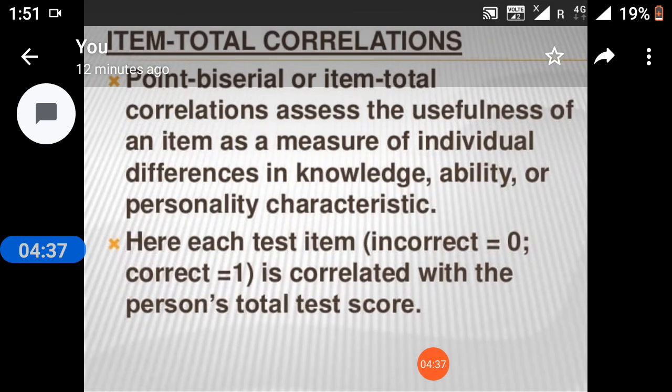Point biserial or item total correlations assess the usefulness of an item as a measure of individuals' differences in knowledge, ability, or personality characteristics.